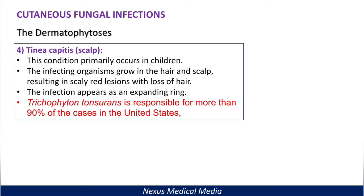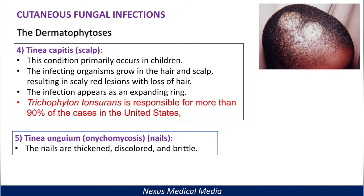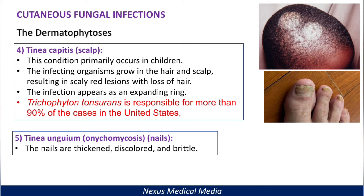Tinea capitis — 'caput' meaning head — affects the scalp and primarily occurs in children. The infecting organism grows in the hair and scalp, resulting in scaly red lesions with alopecia halos, appearing as an expanding ring. Trichophyton tonsurans is responsible for more than 90% of tinea capitis cases in the United States. Tinea unguium, also called onychomycosis, affects the nails, which become thickened, discolored, and brittle.